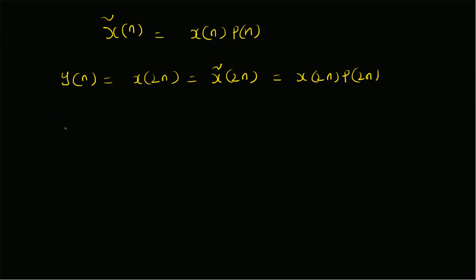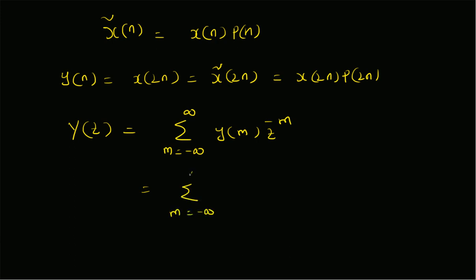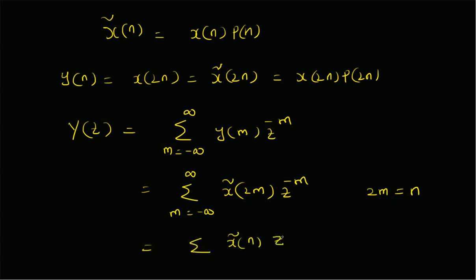Now let us look at the Z-transform of y(n). Y(z) is by definition the summation from m = −∞ to +∞ of y(m)·z^(−m). Since y(m) = x̃(2m), we can write it as the summation from m = −∞ to +∞ of x̃(2m)·z^(−m). Now we perform the key manipulation: let 2m = n, so that n only takes even integer values. We then have the summation of x̃(n)·z^(−n/2), where the summation runs over n from −∞ to +∞.